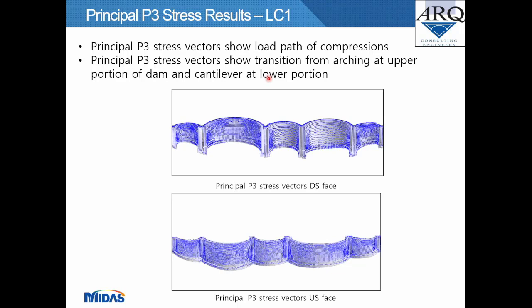The principal P stress vector results show the load path of compressions. The top portion of the arches shows definite arching action, transitioning from arching at the upper portion of the dam to cantilevering at the bottom portion.